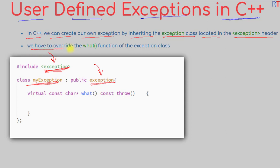Then we have to override the what function of the exception class. Inside our user-defined exception class we have to override the what function of the parent exception class, and inside the what function we can define our own user-defined exception.